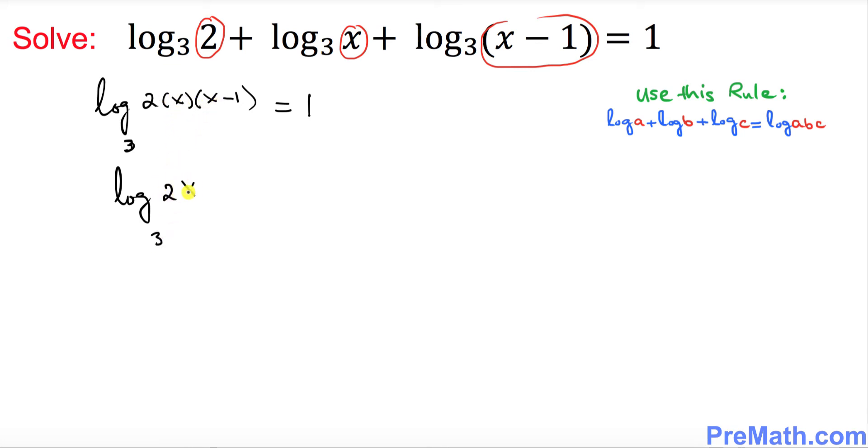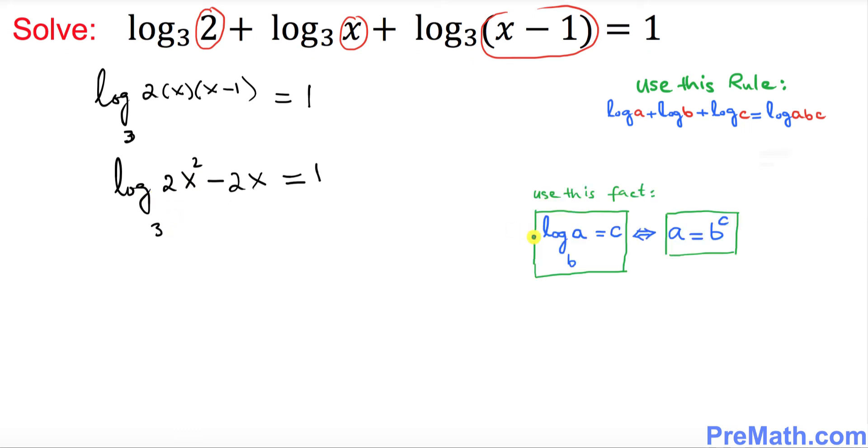We can go ahead and multiply them out, so 2x times x minus 1 makes 2x² - 2x = 1. Now we want to convert this logarithmic equation into an exponential one and we will be using this fact.